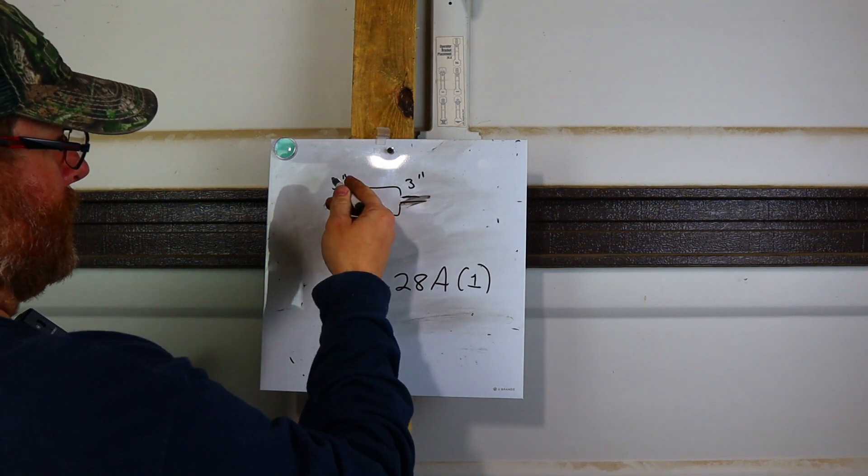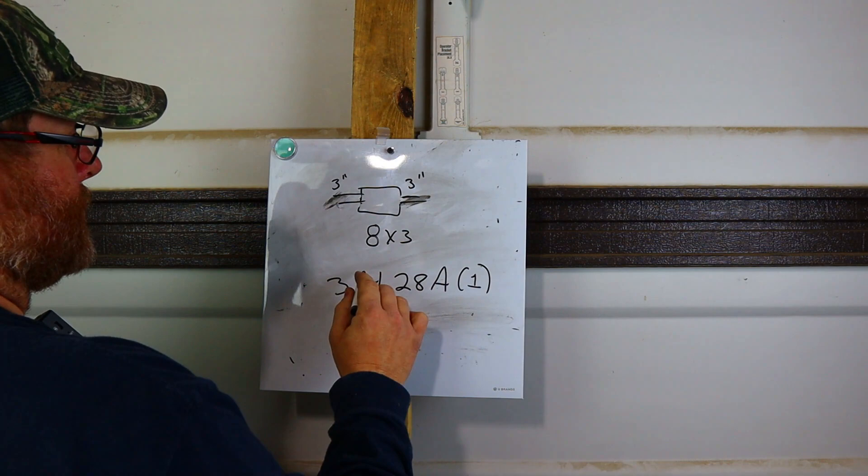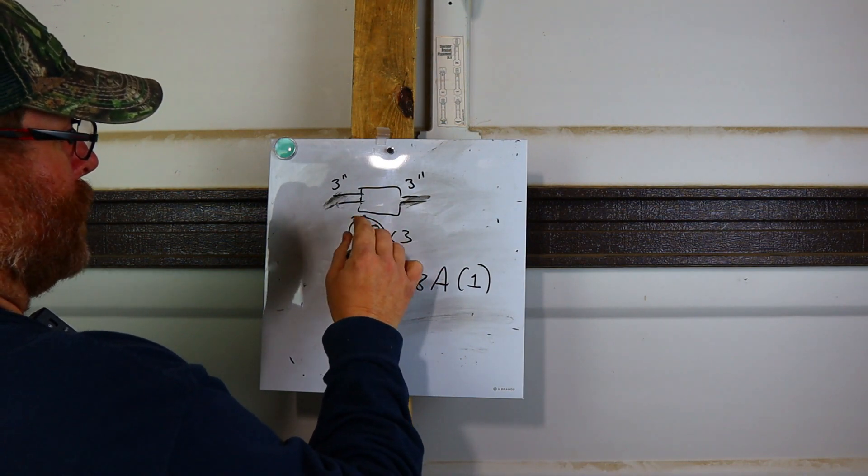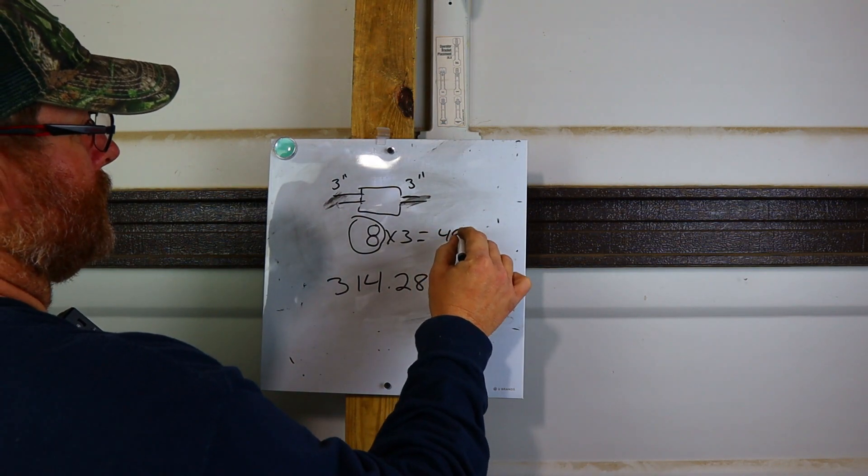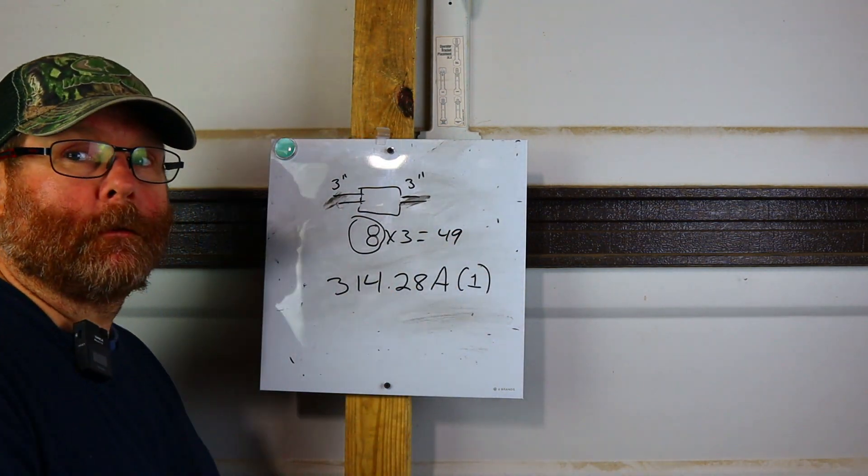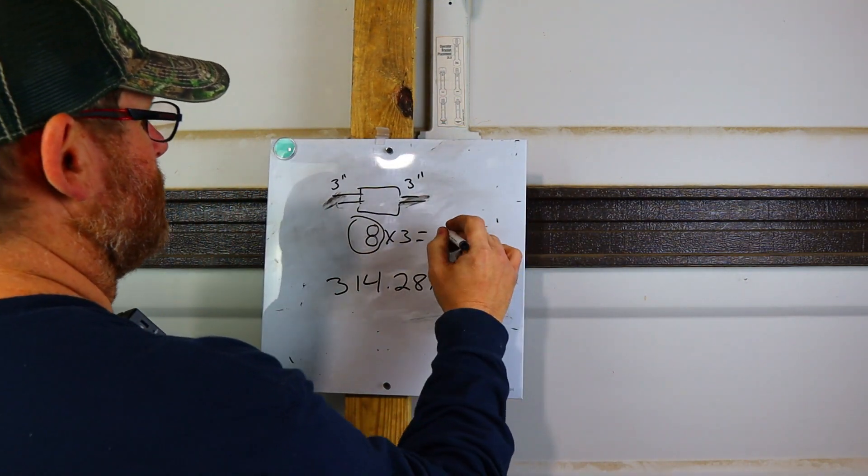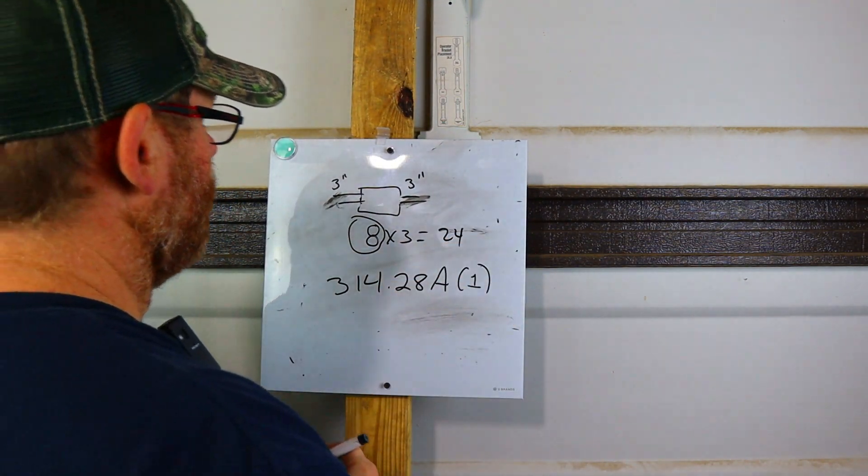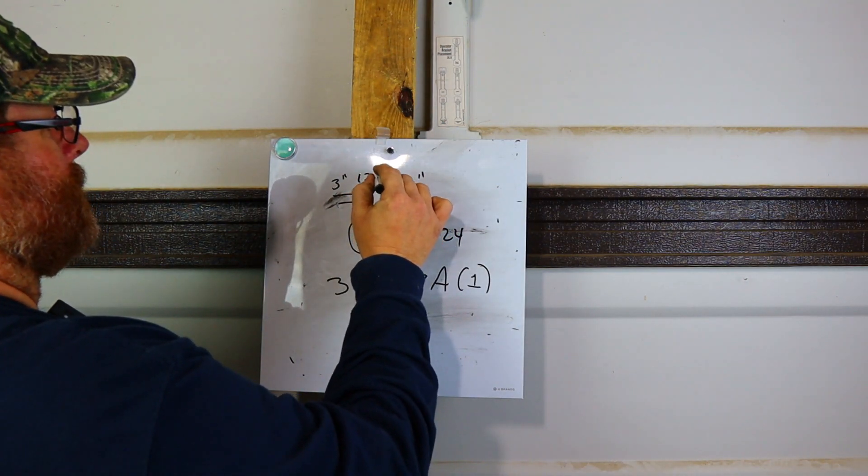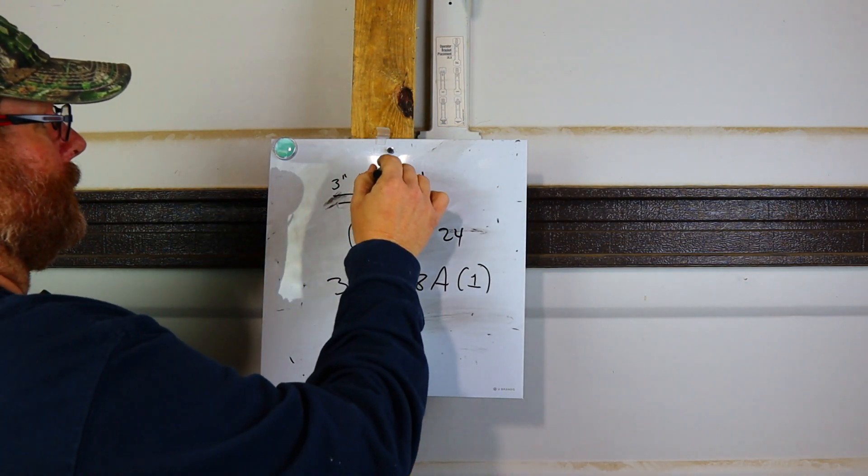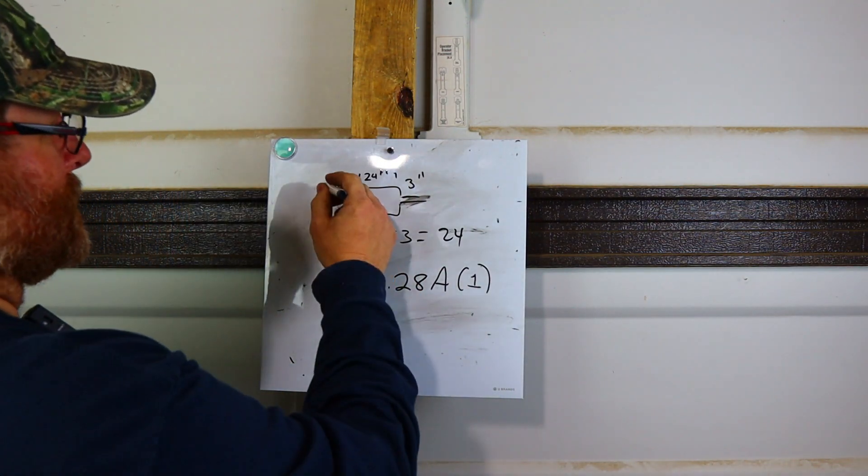So what you'll do is, because it's only a straight pull, you're just going to take one of these. It'll be 8 times 3 because 8 is the multiplier. 8 times 3 is 24. So you'll need from here to here a 24 inch box. Now that's what I said earlier, right? But I was talking about 2 inch. I'm just showing you.